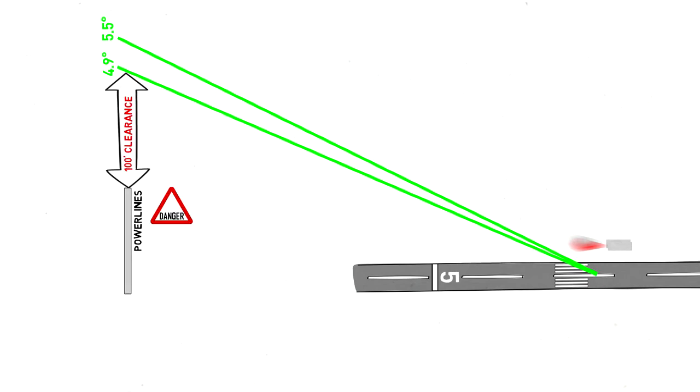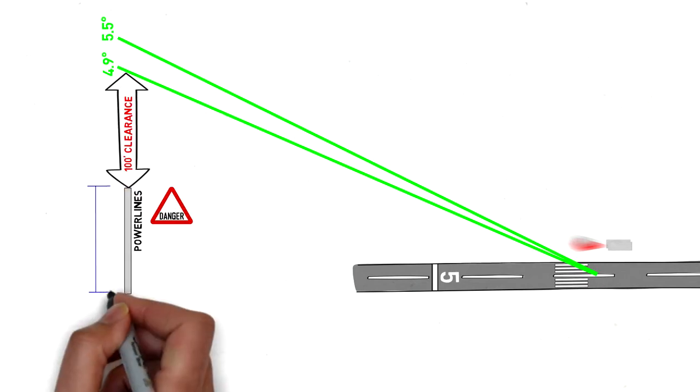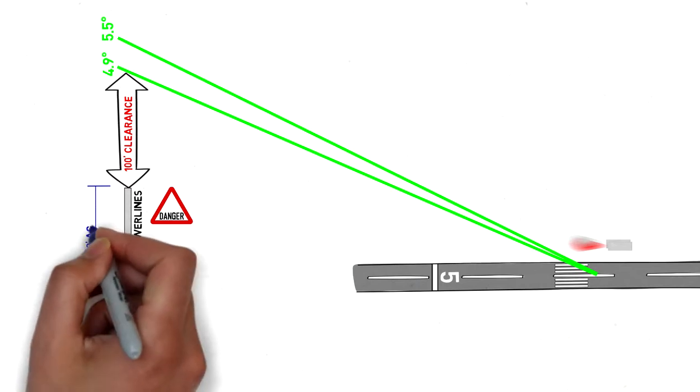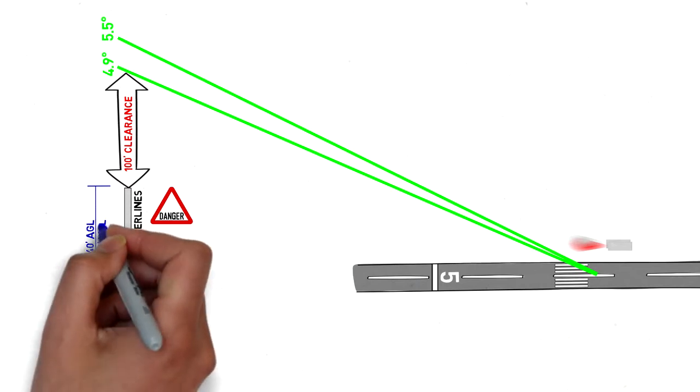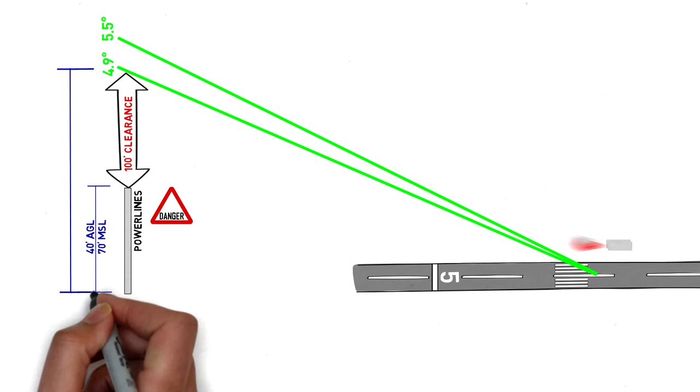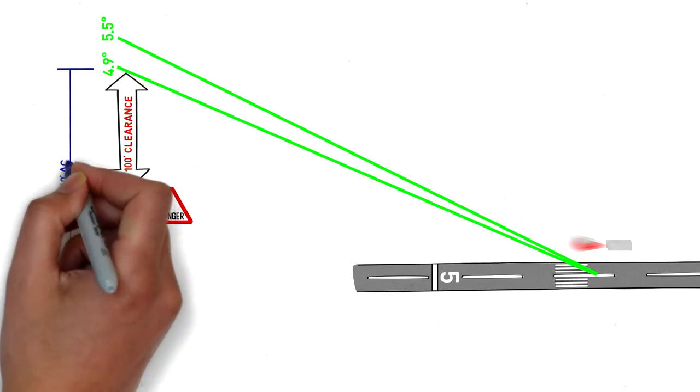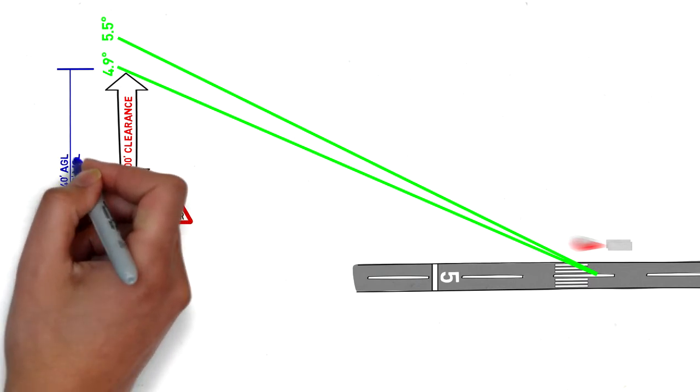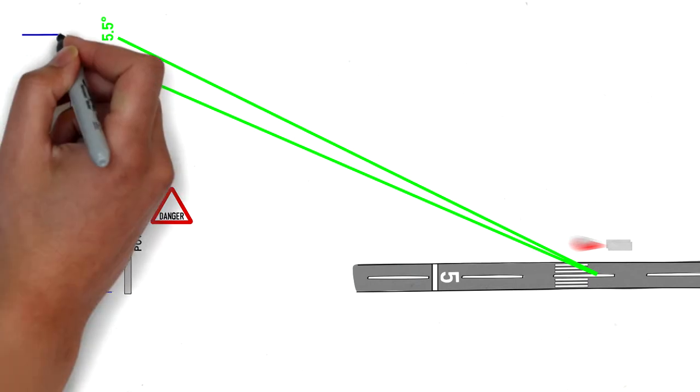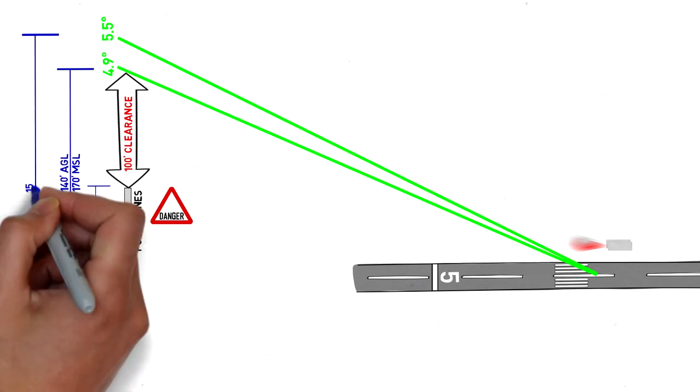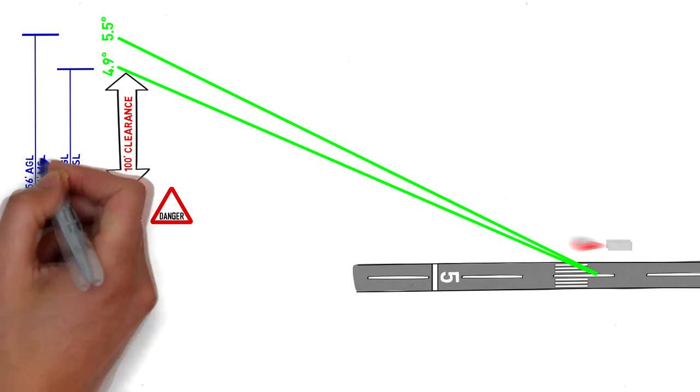Let's look at it in more detail. Since the power lines are 70 feet MSL, to cross them with 100 feet of clearance, your altimeter should indicate at least 170 feet. Of course, this assumes you have the correct altimeter setting and there are no equipment errors. By the way, 170 feet places you at the bottom of the glide slope, as the middle is really at 178 feet MSL.